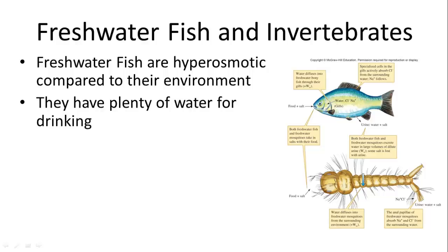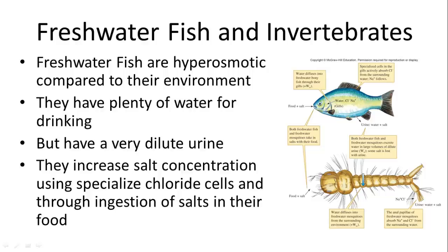Freshwater fish are hypoosmotic compared to their environment, and they have plenty of drinking water. But they also have to provide a way to keep that water from increasing their body mass to where they can function. So they have a very dilute urine with lots of water being excreted. And then they also increase salt concentrations by using specialized cells in their gills called chloride cells, and also receive some through ingestion of their food.